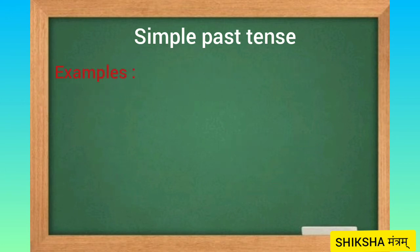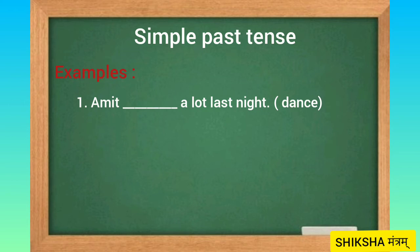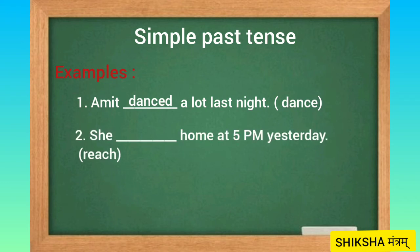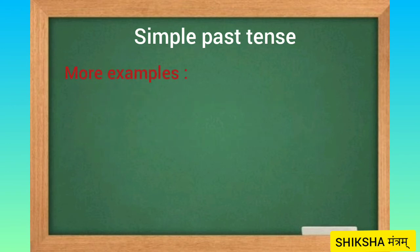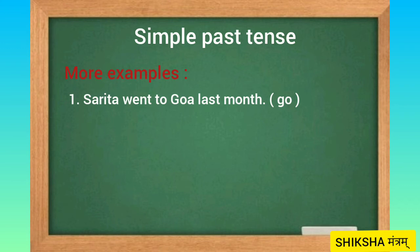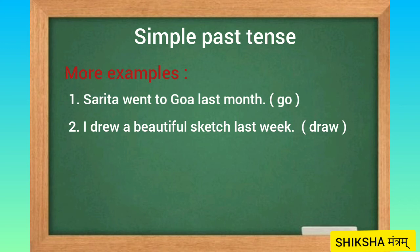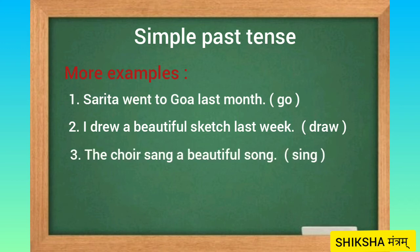Let's see some examples. One: Amit danced a lot last night. The verb given is 'dance' and we use the past form by adding D, so the sentence is: Amit danced a lot last night. Second example: She reached home at 5 pm yesterday. The verb is 'reach', so we add ED. More examples: Sarita went to Goa last month. I drew a beautiful sketch last week. The choir sang a beautiful song. In all these sentences the words are used in their past forms.